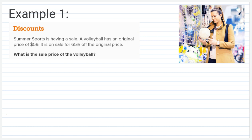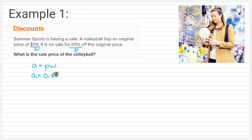All right, taking a look at this again — we're trying to find that sale price. When I solve this in two steps, I'm going to figure out the amount of the discount and then subtract that from the original price. My original price of $59 is W, and my discount was 65% off. So A equals 0.65 times $59. I take my percent and change it into its decimal form and then multiply by $59. That gives us a discount amount of $38.35, which is the amount being taken off the original price.